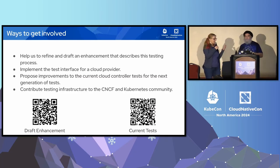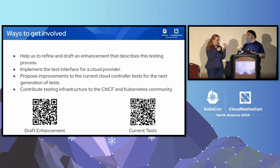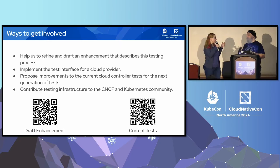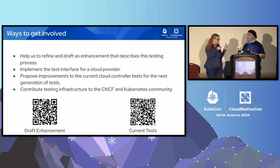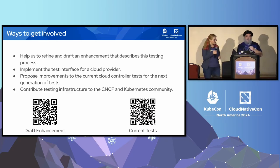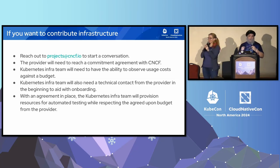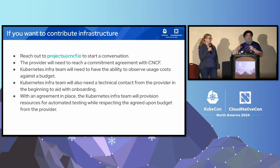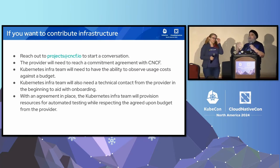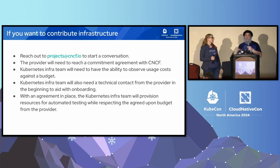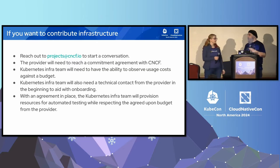When we get to integrating the tests into the Kube CI, that will require discussion both between providers and the Kubernetes infrastructure community. If you would like to contribute your infrastructure, you can start by reaching out to projects@cncf.io to start a conversation with the CNCF — that's the way to contribute infrastructure you might control. You'll need to reach some commitment with the CNCF as part of the negotiating process.